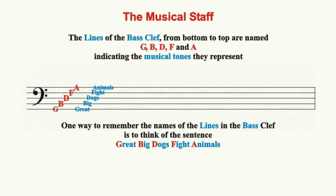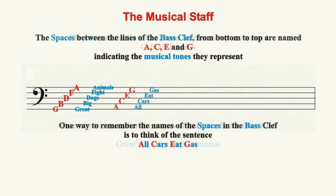One way of remembering the names of the staff lines in the bass clef is to use the phrase: Great big dogs fight animals. From the bottom line to the top line, each tone sounds like... The spaces between the lines of the staff in the bass clef, from bottom to top, are named A, C, E, and G. One way to remember the names of the spaces in the bass clef is to use the phrase: All cars eat gas. The tones represented by these spaces, from the lowest to the highest, sound like...